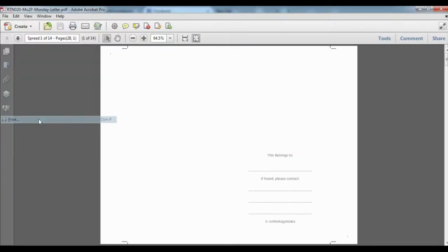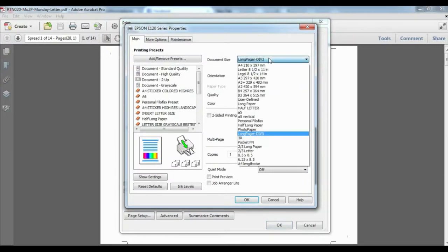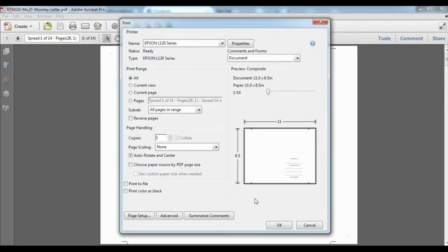We are going to print the even pages. Select print, properties. Select your paper size, select your print quality. Under print range, select all, and select even.